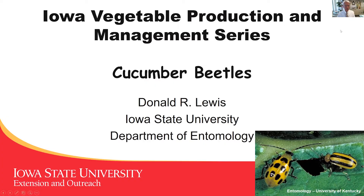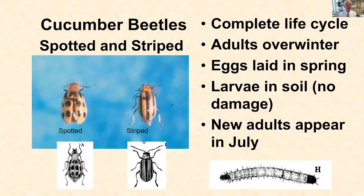Cucumber beetles come in two different kinds. There's the spotted cucumber beetle and the striped cucumber beetle. For most of their life, we can talk about them as if they're the same thing — there's a lot of similarity and overlap. But when you get right down to it, it's the striped cucumber beetle that's going to be the bigger pest in vegetable production, particularly in muskmelon production, less so in watermelon and other cucurbits.